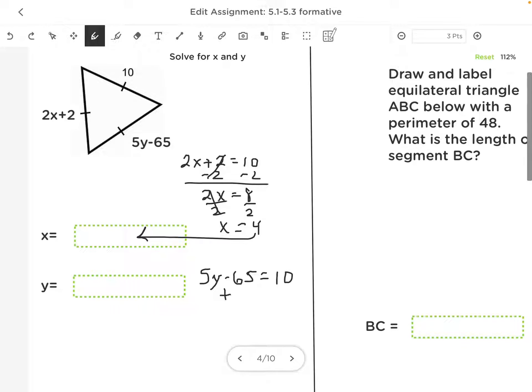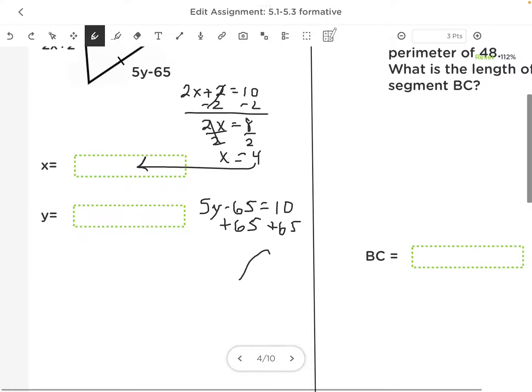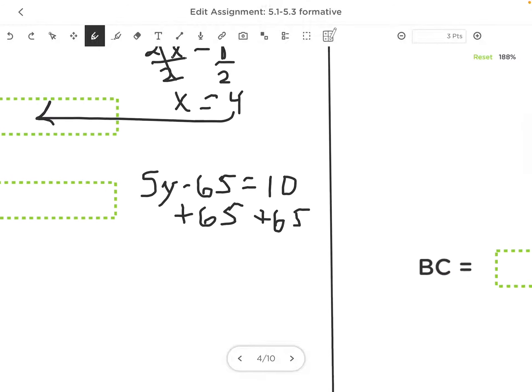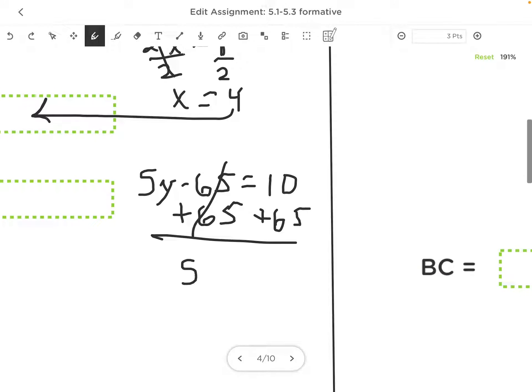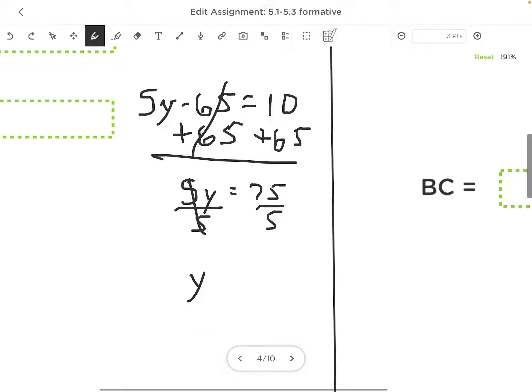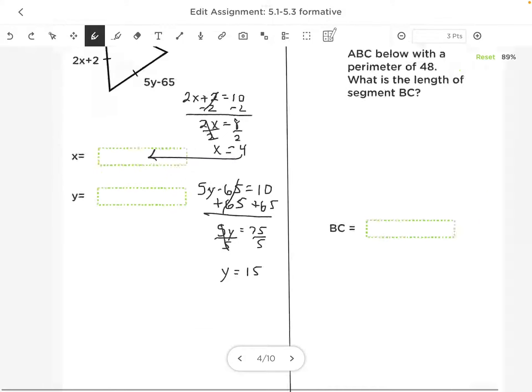I'm going to add 65 to both sides. So I get 5y is equal to 75. Divide both sides by 5, and y equals 15.